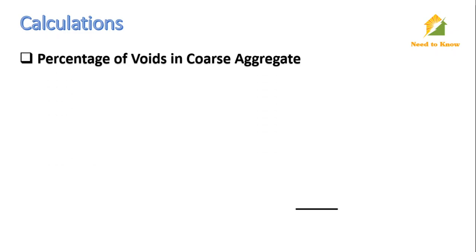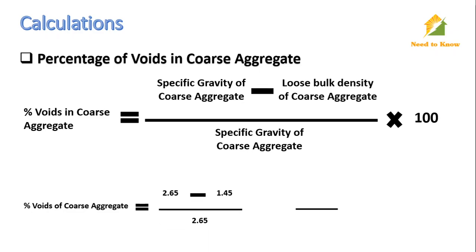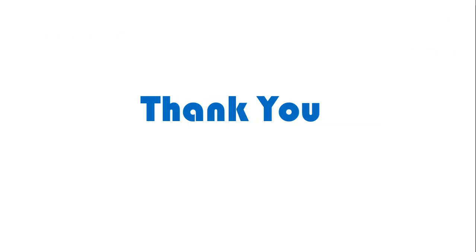Lastly, we can measure the percentage of voids. The formula for void ratio of coarse aggregate is: take the loose bulk density of coarse aggregate, divide by the specific gravity of coarse aggregate, and multiply by 100. The specific gravity of coarse aggregate is 2.65. Substituting the values and calculating, we get 45% voids in the coarse aggregate. Thank you so much for watching. If you have any queries, kindly comment and I will answer there. Please subscribe to my channel and share the videos for learning purposes.